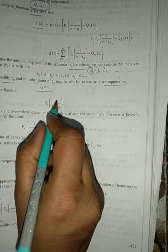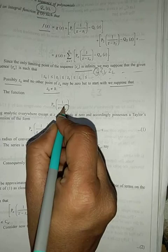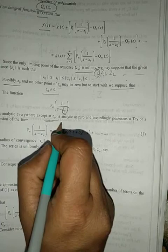Now the function pₙ(1/(z-zₙ)) this is polynomial in 1/(z-zₙ) is analytic everywhere except at zₙ, is analytic at 0 and according to Taylor series expansion if the function is analytic every analytic function can be expressed as a Taylor series form.